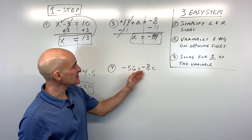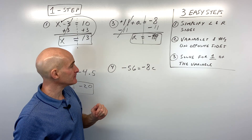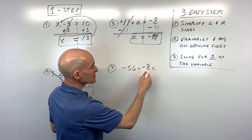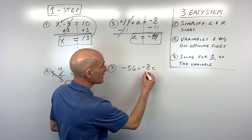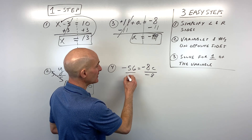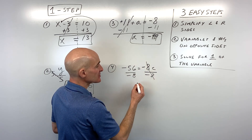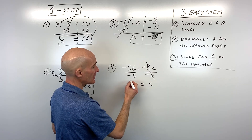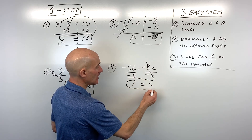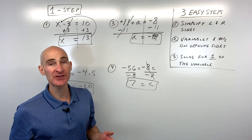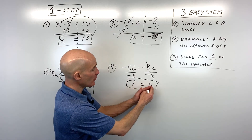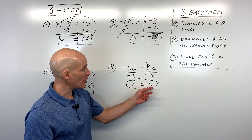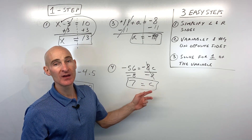Number four: negative 56 equals negative 8c. We want to get c by itself, so instead of multiplying by negative 8, let's divide both sides by negative 8. Those cancel and c is by itself. Negative 56 divided by negative 8 is positive 7 because two negatives give a positive. It doesn't matter whether the variable ends up on the right or the left — the main thing is solving for just one of that variable.